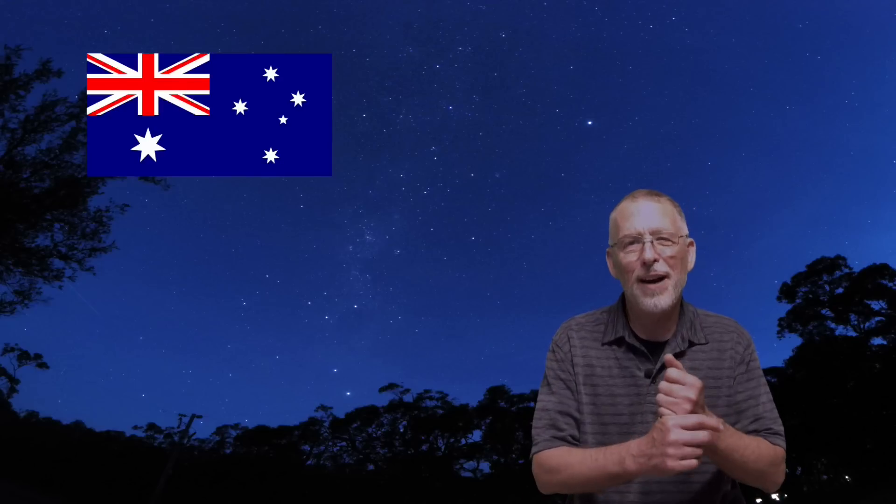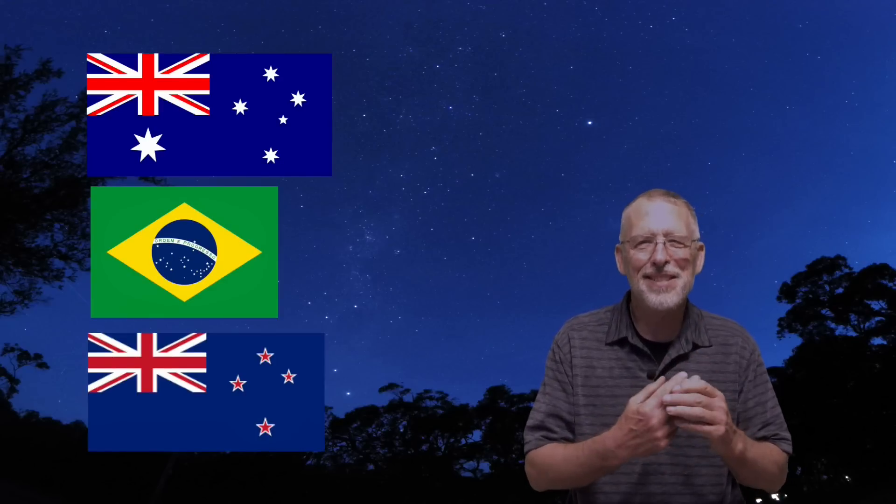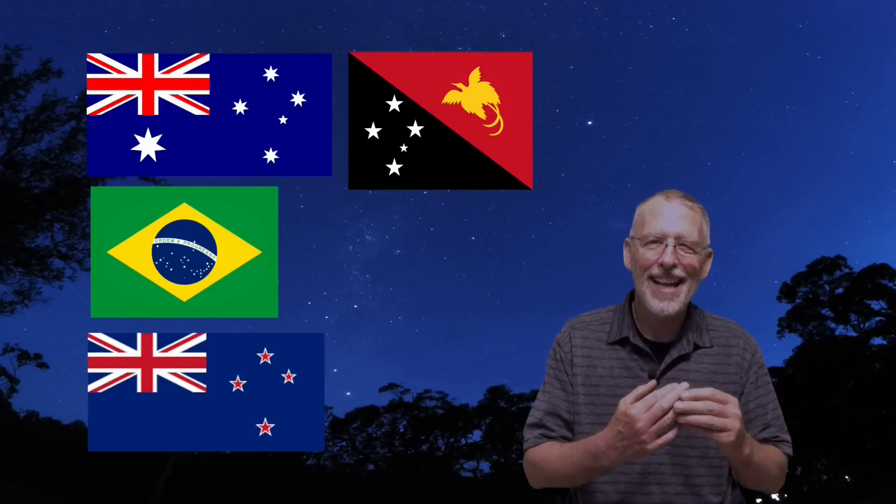The Southern Cross is represented on many national flags, including Australia, Brazil, New Zealand, Papua New Guinea, and Samoa.